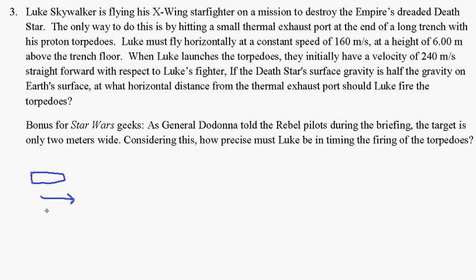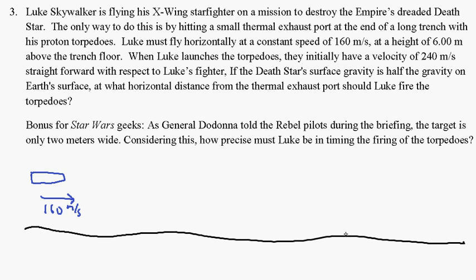He is flying at a speed of 160 meters per second horizontally over the floor of this trench in the Empire's Death Star, which is perfectly flat, as you can see from what I just drew. What he does then is he fires his proton torpedoes — not photon torpedoes, that's Star Trek — proton torpedoes. These have a speed of 240 meters per second initially relative to Luke's Starfighter, so the actual speed relative to the Death Star trench is 160 plus 240, and so they're initially launched at 400 meters per second. That's the only V₀ₓ — that's really the only way relative motion comes into this problem.